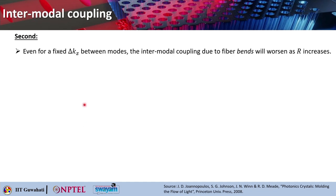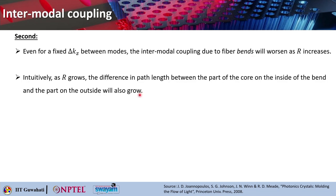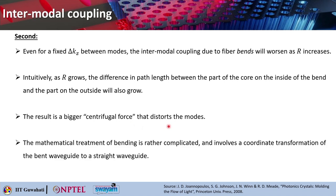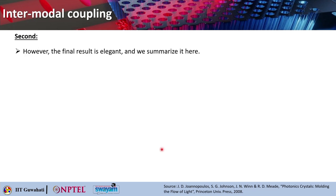The second reason is that even if you maintain a fixed delta·k_z between modes, you will see intermodal coupling due to fiber bending, and bending will worsen as radius R increases. Intuitively, as radius R grows the difference in path length between parts of the core on the inside versus the outside of the bend also grows. The result is a bigger centrifugal force that distorts the modes. The mathematical treatment of bending is complicated, involving a coordinate transformation of the bent waveguide into a straight waveguide, so we will not go into those details.